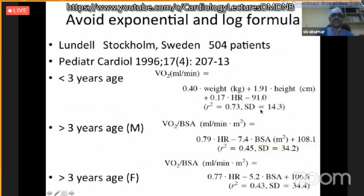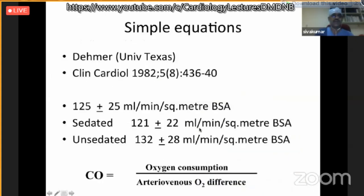To avoid the logarithm calculation, Lundel's formula is based only on height, weight, and constants, derived from around 504 patients in Sweden, but most of us still use LaFarge equations. If no equations are available, the average VO2 of a normal human is 125 ± 25 ml/min/m² BSA. Add for males, subtract for females; add for younger children, subtract for older persons; subtract if sedated, add if active and unsedated.